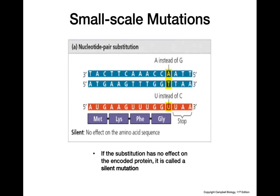First, we have silent mutations. In a silent mutation, the new nucleotide pair has no effect on the encoded protein — we encode the same amino acid as we would have originally, even though we've changed one of the nucleotide pairs. It's called a silent mutation because there is no visible effect on the phenotype of that individual or on the function of that protein.